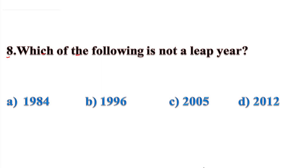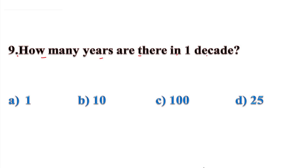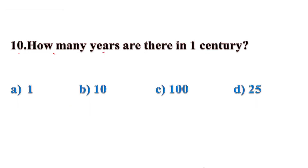Question 8: Which of the following is not a leap year? Options: A-1984, B-1996, C-2005, D-2012. Correct answer: Option C, 2005, because 2005 is not divisible by 4 — dividing leaves a remainder. Question 9: How many years are there in one decade? Options: A-1, B-10, C-100, D-25. Correct answer: Option B, 10. Question 10: How many years are there in one century? Options: A-1, B-10, C-100, D-25. Correct answer: Option C, 100.